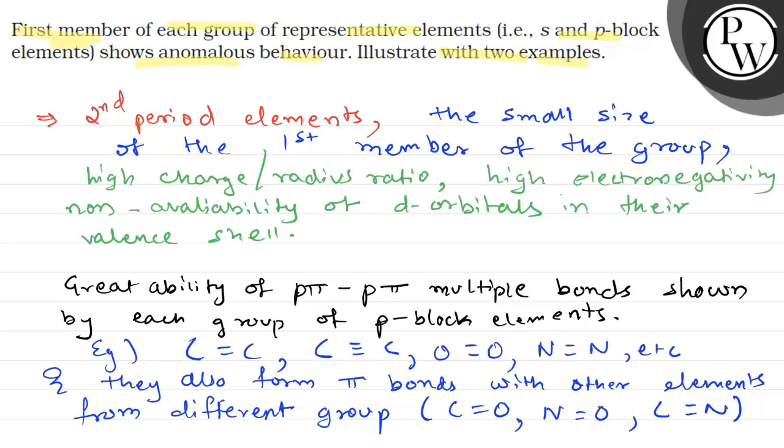Overall, we can conclude that first member of each group of representative elements show anomalous behavior due to their small size, high charge radius ratio, high electronegativity, and non-availability of d orbitals in their valence shell. These are some of the reasons. Hope you understood it well, best of luck.